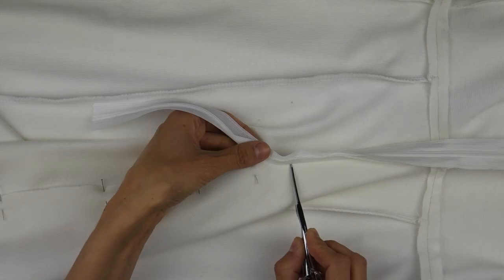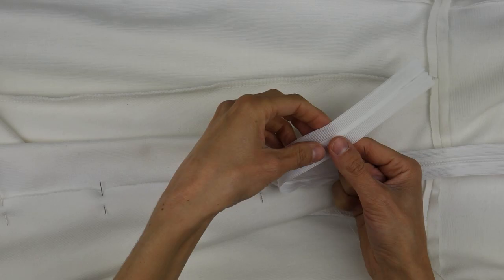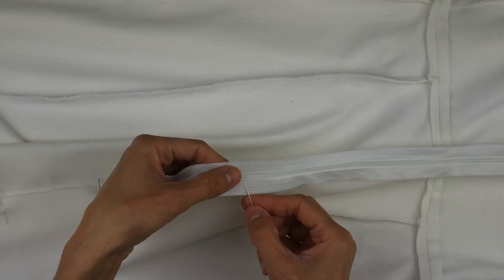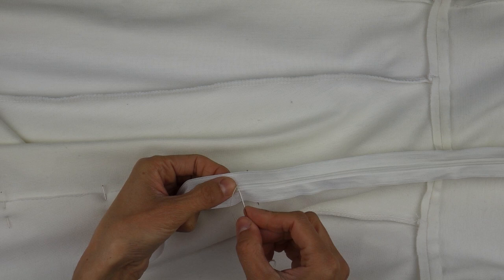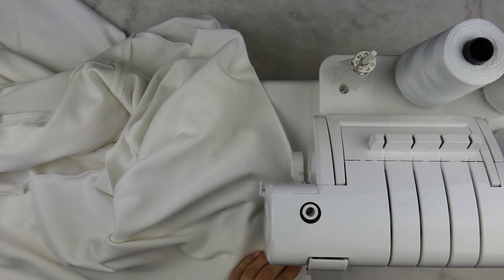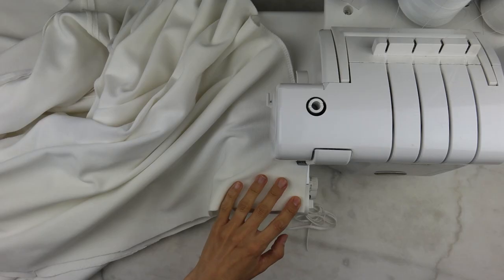But first we are going to make a few stitches at about one or two centimeters below the place where we stopped sewing the zipper. This way we secure it because we are going to cut the excess. It will not open from the bottom and the head of the zipper will not zip out of its groove.